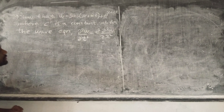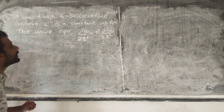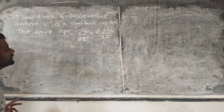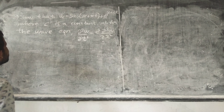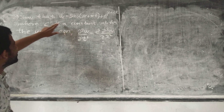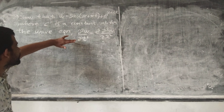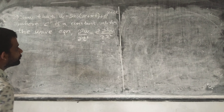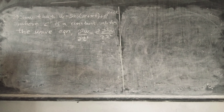Next question: show that w equals 5cos(3x + 3ct) plus e raised to (x + ct), where c is a constant, satisfies the wave equation: dou square w by dou t square equals c square times dou square w by dou x square.